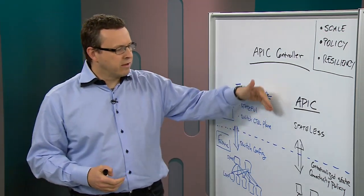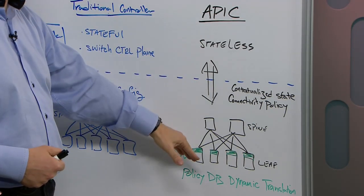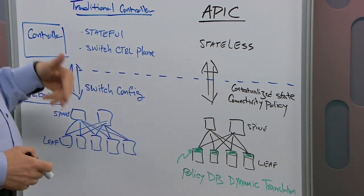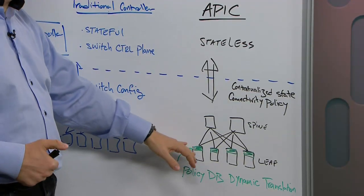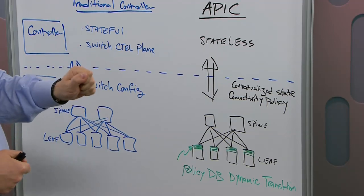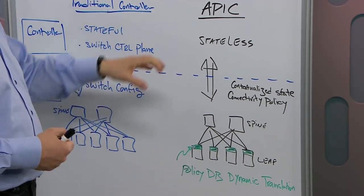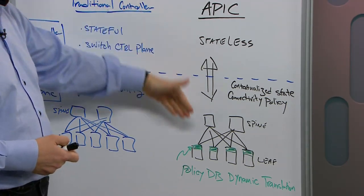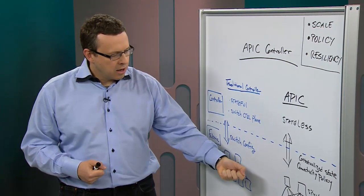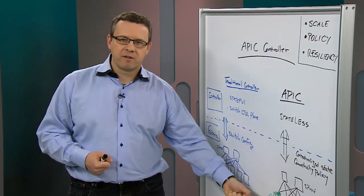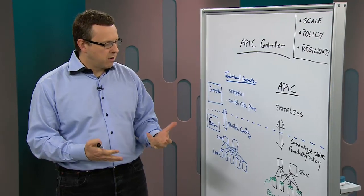What we do is that controller is pushing down that policy. Instead of translating that at the controller level, we're pushing down the set of policies into the switches themselves. The translation from what you want from a policy perspective to what really has to be configured on the switch is happening in the switch. That is a huge difference because it takes the load off the controller, which is the central point where you have the biggest scale requirements. By pushing it into the switches, you don't have to know state and configuration history of the switches at the controller level. The switches operate like autonomous switches as they do today, and we know that scales well in a routed environment.